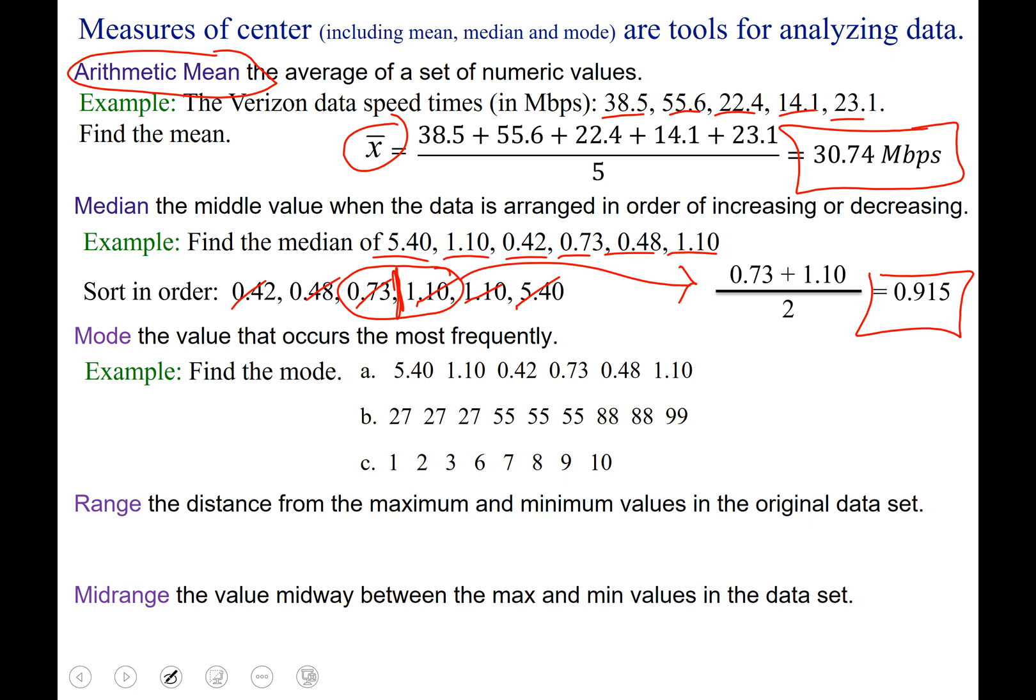Next, the mode. That's the value that occurs the most frequently. So we are asked to find the mode here. Let's look at the data in part A. Any of those represented the most frequently? 1.10 is represented twice, so that's the mode.